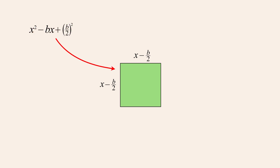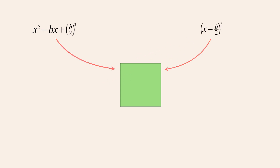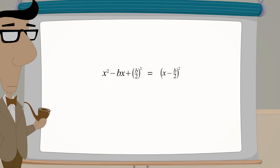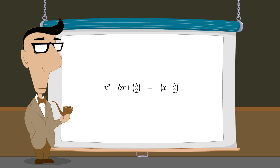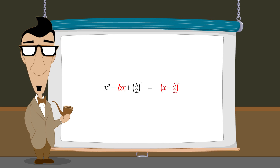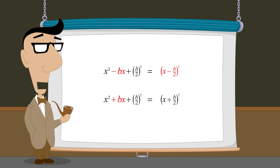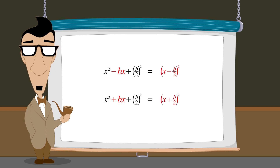And since the side length of this square is x minus b over two, this quadratic expression can also be written as x minus b over two-quantity-squared. This geometric proof shows that when b is negative the quadratic can be written as x minus b over two-quantity-squared, and we already know that when b is positive the quadratic can be written as x plus b over two-quantity-squared. Therefore, we can always use the same identity, remembering that b can either be a positive or negative constant.